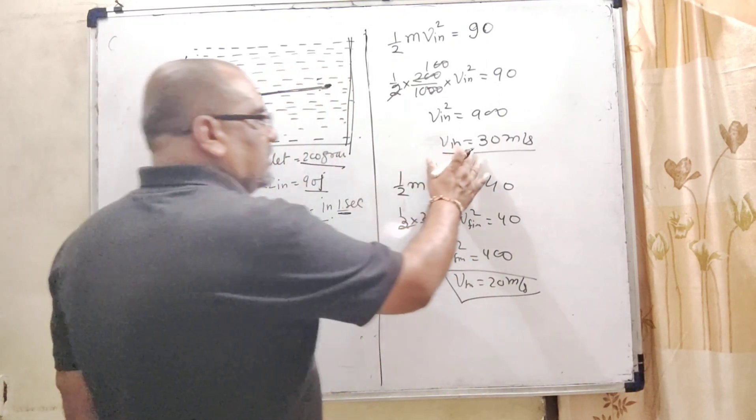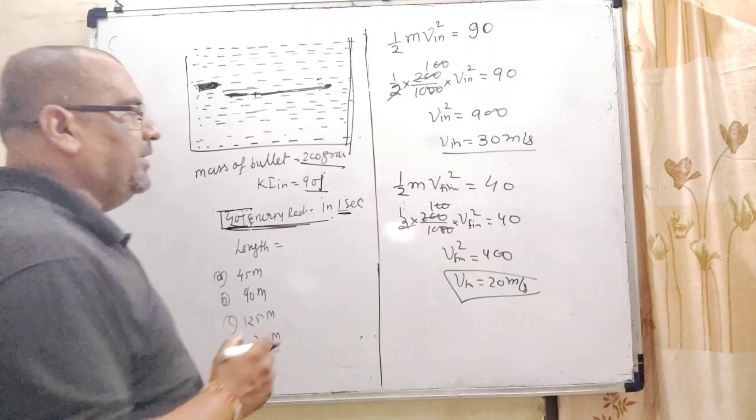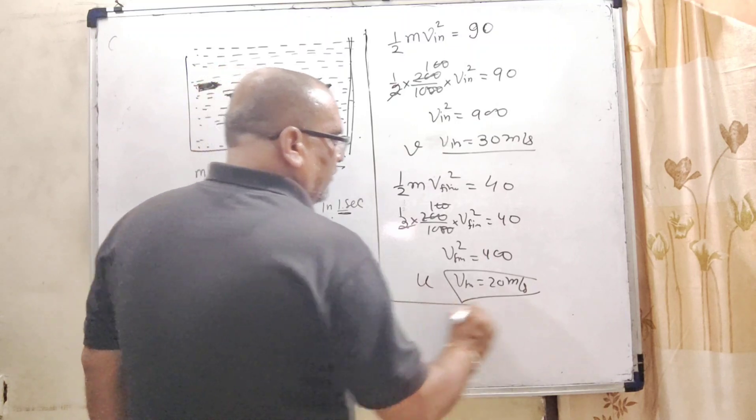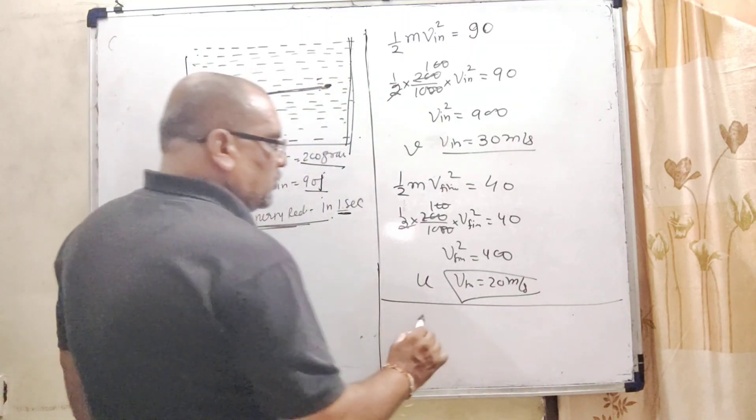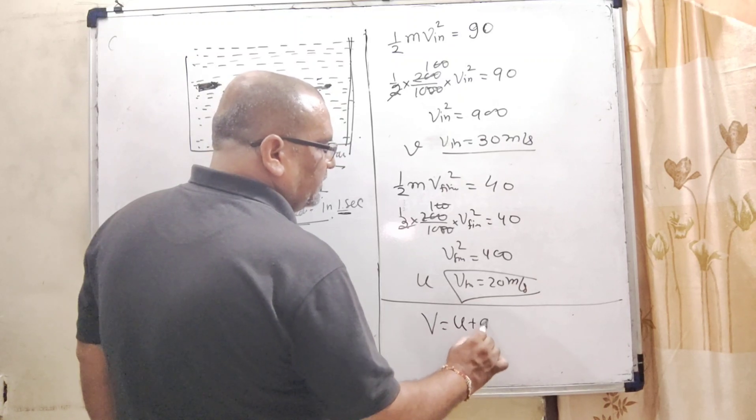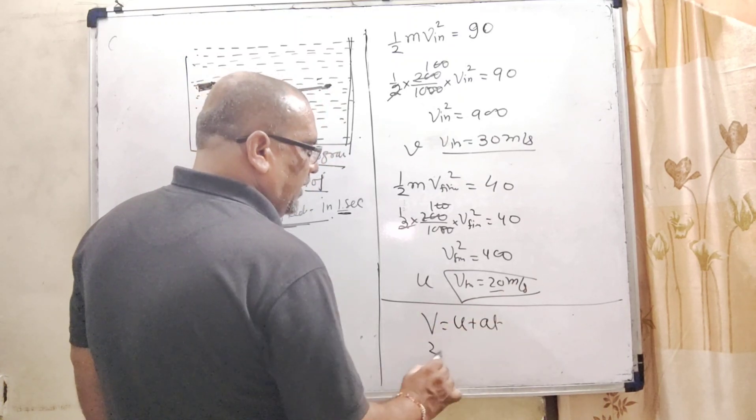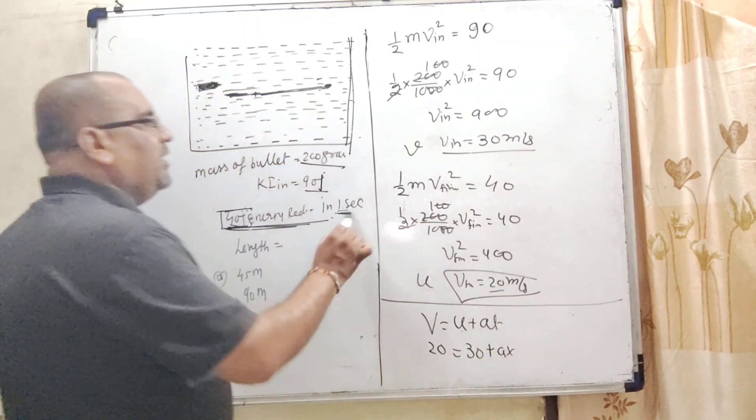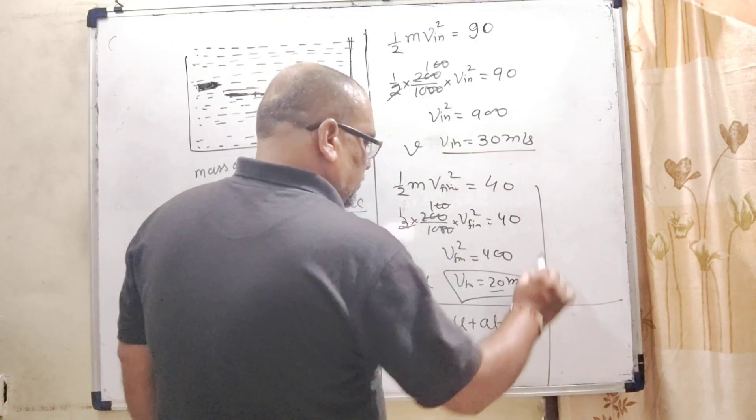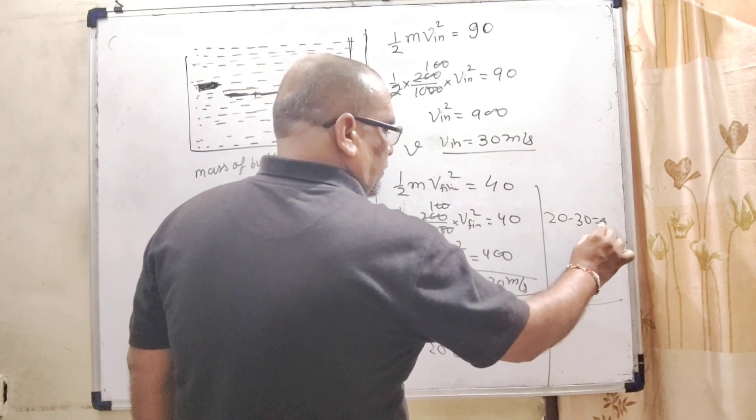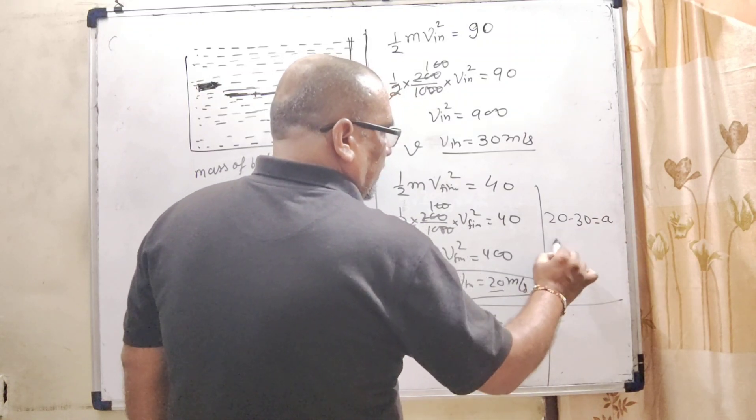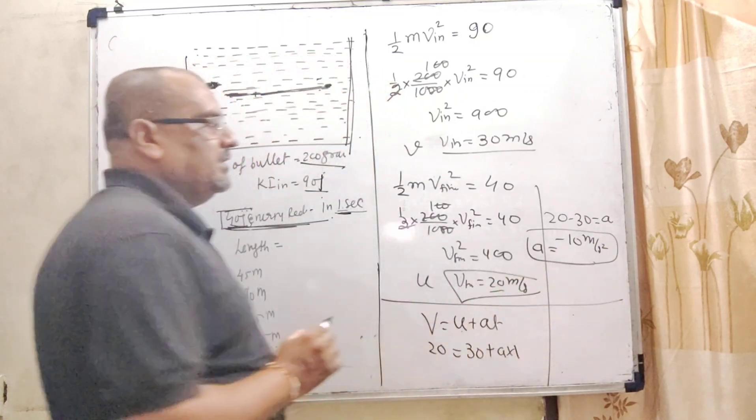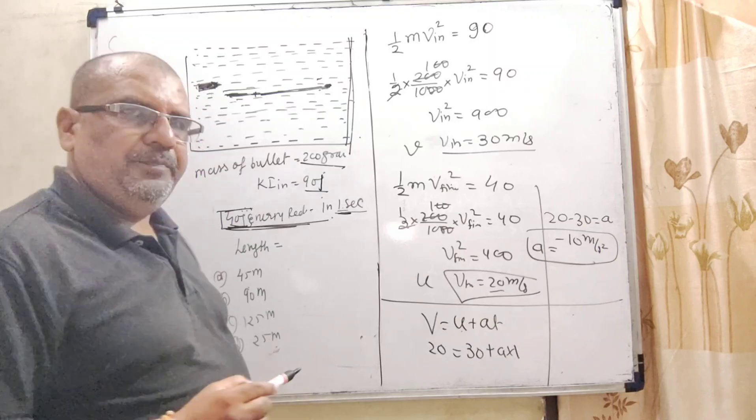We get the final velocity and initial velocity. With this, final velocity can be considered v, initial velocity can be considered u. Then we can find the acceleration of this bullet. Using the formula v equals u plus at: final velocity is 20, initial velocity is 30, acceleration times time which is 1 second. So 20 minus 30 equals a times 1. Therefore a equals minus 10 meters per second squared. That is the acceleration.